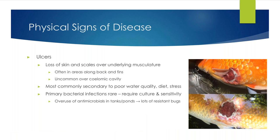The most frequently seen physical signs of disease include ulcers — a loss of skin and scales exposing the underlying musculature. This often occurs along the back and fins where there is a lot of blood flow and muscle. It is uncommon over the salomic or abdominal cavity, but it does occur. Most commonly, ulcers are secondary to poor water quality, diet, and stress. Having a primary bacterial infection is very rare; most cases in private practice are due to water quality. Primary bacterial infections, though rare, are most commonly seen in fish that have been exposed to a lot of antibiotics.